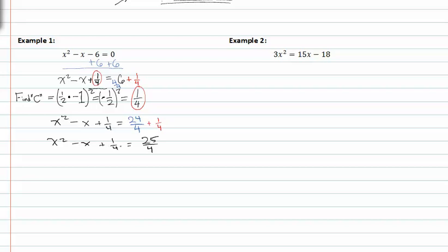Now, I have x squared minus x plus one fourth is equal to twenty-five fourths. I can factor my perfect square trinomial on the left to x minus one half squared, and on the right I still have twenty-five fourths. So, if I take the square root of both sides, I'm going to have x minus one half is equal to plus or minus five halves. This is not completely done yet because I have an isolated x, so I need to add one half to both sides.